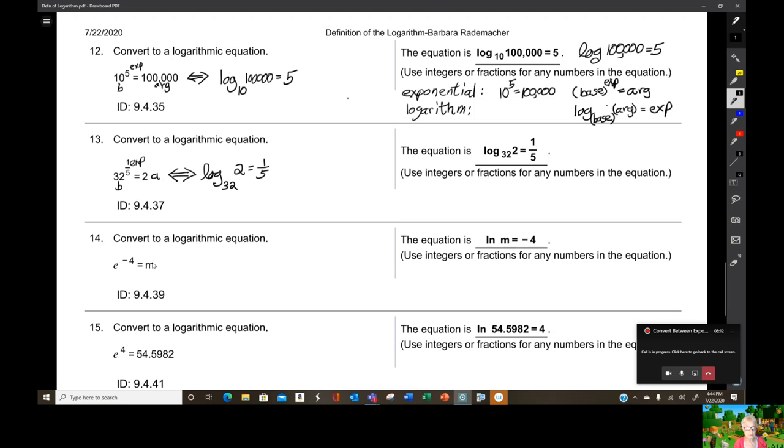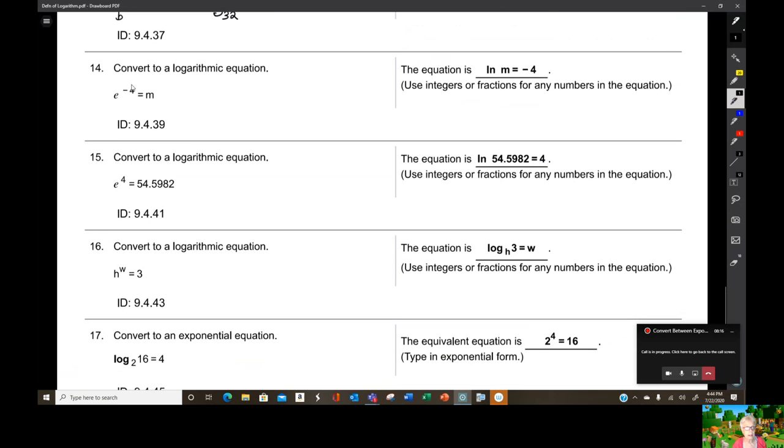Alright, here we go. Let me pull this up. Here's the base, here's the exponent, here's the argument. So we'll write this as log base argument equals exponent. Well, wait a minute. We don't often see L-O-G-E here. No. Log base E is L-N. So what this really is, is the L-N of M equals negative 4. And indeed, that's what they put over here.